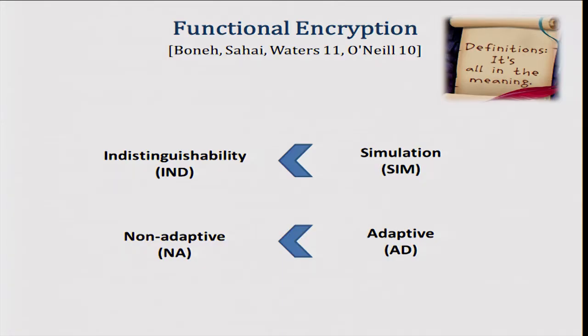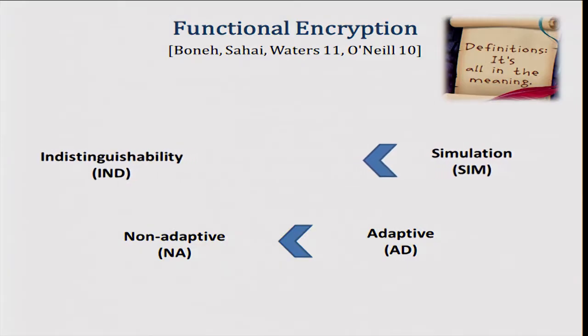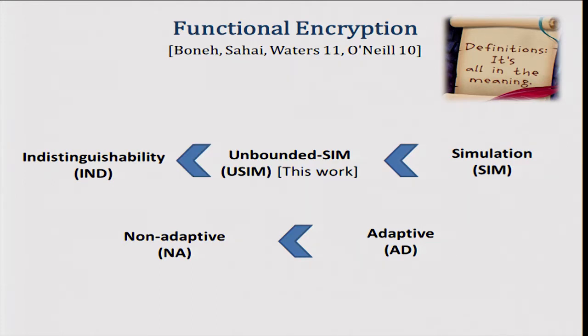When we have these other notions of adaptive versus non-adaptive: adaptive informally means that the adversary can ask for secret keys after the challenge ciphertext, and non-adaptive means that he cannot. In this paper, we introduce another notion for functional encryption which we call unbounded simulation, and it fits somewhere in the middle between regular simulation and the indistinguishability-based definition. The motivation for this came from zero-knowledge, where we have this definition of unbounded simulator and it's known to be equivalent to the indistinguishability-based definition.